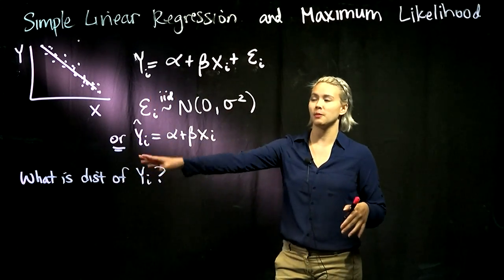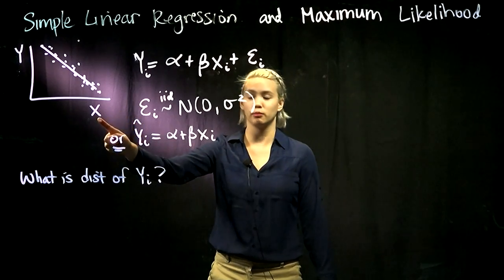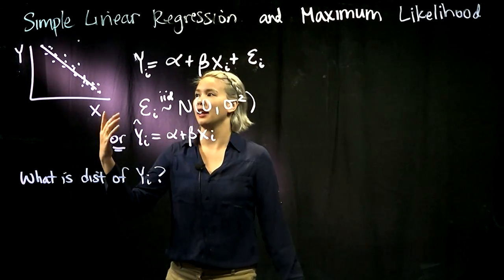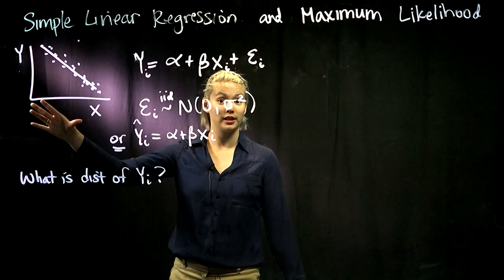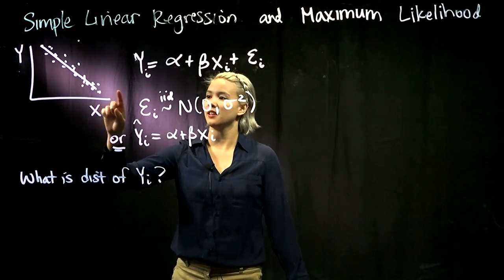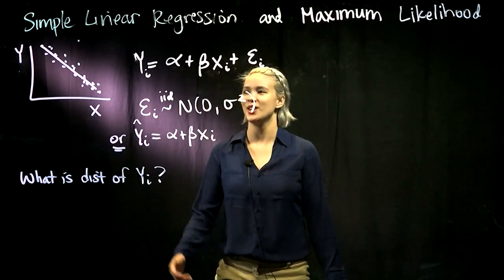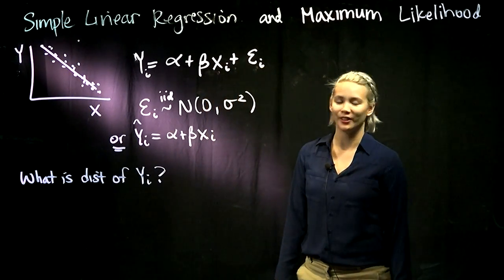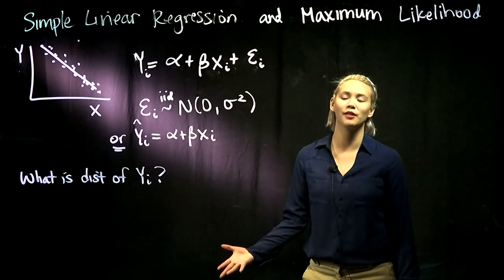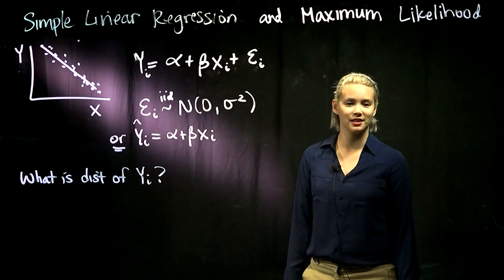We are still talking about simple linear regression, so we have our predictor X and our response or dependent variable Y. These are both quantitative variables, and we can plot them like this. We said that we are looking for the linear relationship between them — in other words, the equation of the line that characterizes this linear relationship.